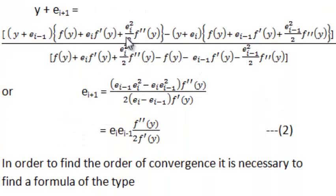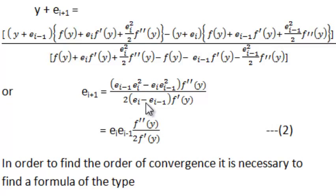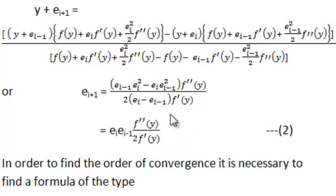On simplifying this equation we get the value of E of i plus 1, which comes to be E of i minus 1 into E_i squared, minus E_i into E of i minus 1 squared, multiplied by f double dash of y, divided by twice E_i minus E of i minus 1, multiplied by f dash of y. On simplifying again, this gives E_i into E of i minus 1 into f double dash y, upon 2 into f dash y. This is equation number 2.